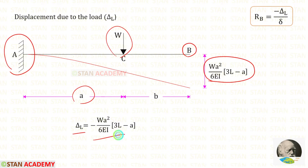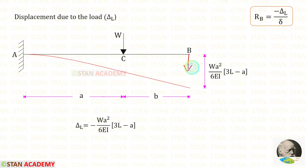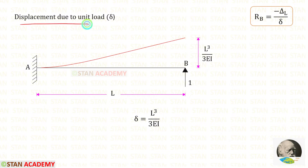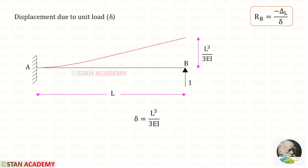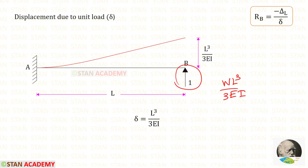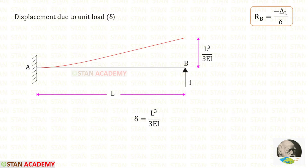For δL, we apply that formula. Since the deflection is downwards, we apply it as negative. Now let us find the displacement due to the unit load δ. In the direction of RB, we apply a unit load and then find the deflection. In the cantilever beam, if the load acts on the free end, the formula to find the deflection is WL³ / 3EI. Here W is 1, so we get L³ / 3EI. The deflection is upwards, so δ will be positive.